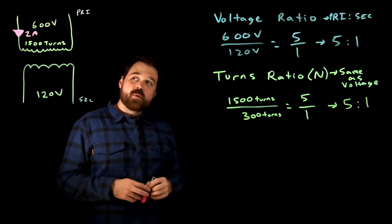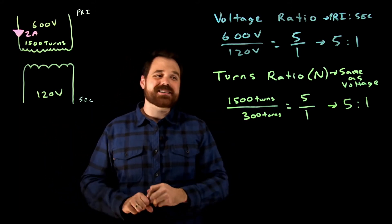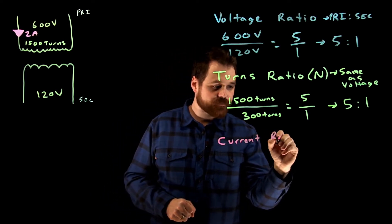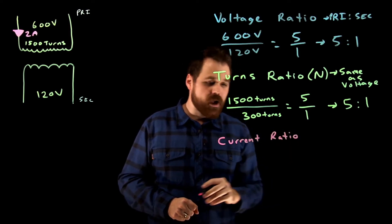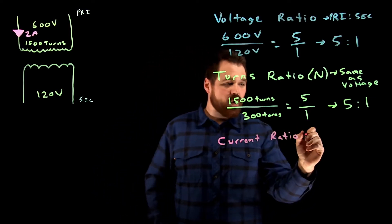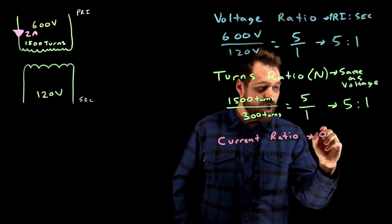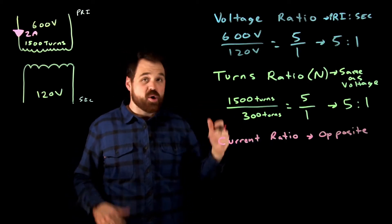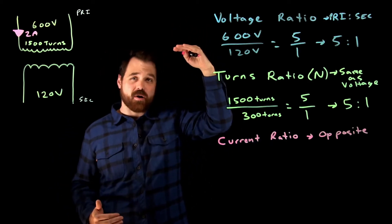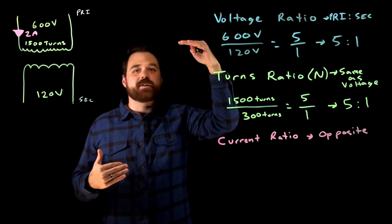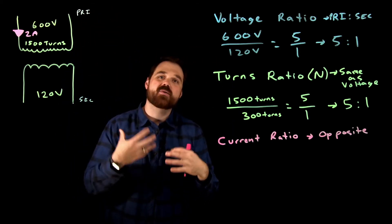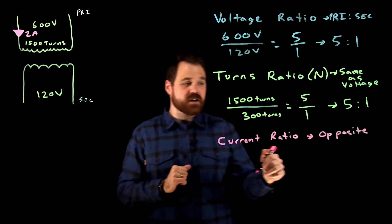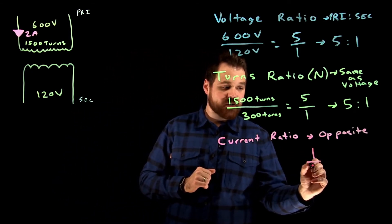The next one, one of the more important, they're all important, I guess the next one is a current ratio. This one is always going to be opposite. And this has to do with, if we have more voltage, we require less current in order to get the same output. We have less voltage, we require more current in order to get the same volt amp rating. So in this case, because it's opposite, we know it's going to be a one to five.